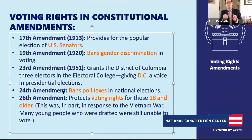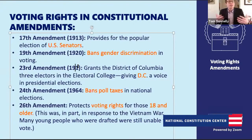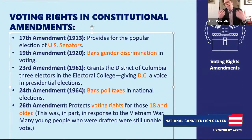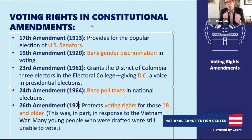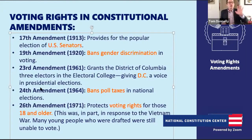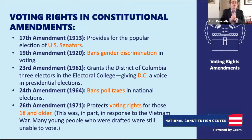The 23rd Amendment brings Washington, D.C. voters into presidential elections, giving D.C. three electoral votes. This was in 1961, and it was ratified during the civil rights era—seen as a way of giving Washington D.C.'s large African-American population a voice in presidential elections. The 24th Amendment in 1964 bans poll taxes in national elections, striking at the heart of Jim Crow laws discriminating against African Americans at the ballot box.